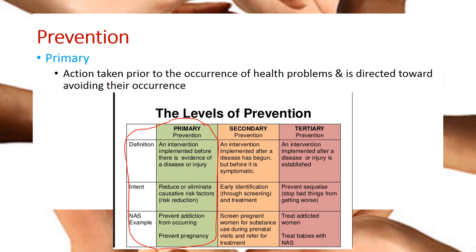Primary prevention consists of actions taken prior to the occurrence of a health problem, directed towards avoiding that occurrence. I would like you to pause the video and look up five examples of primary prevention strategies, making sure you understand how those examples represent actions taken before something happens and directed at preventing it from happening.